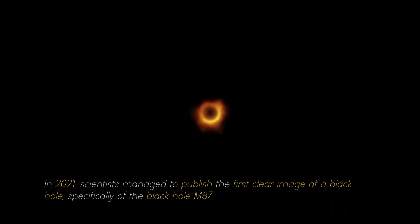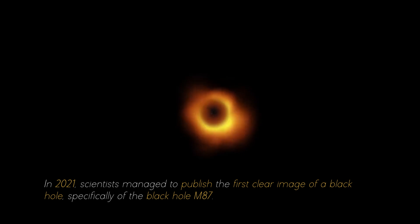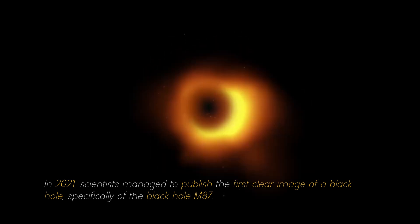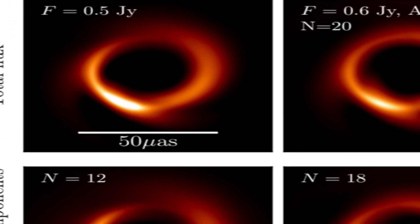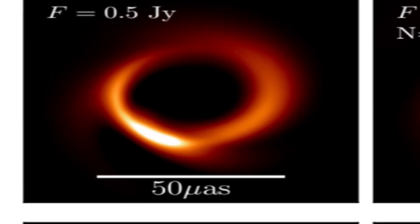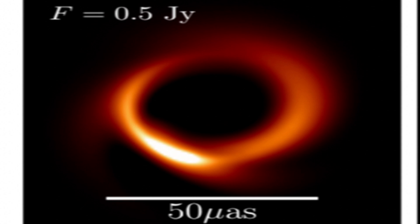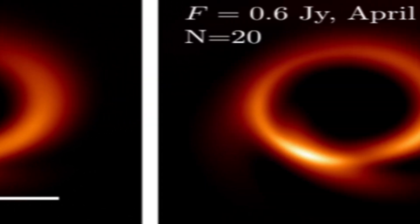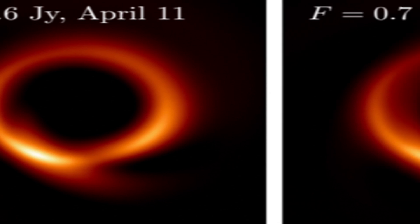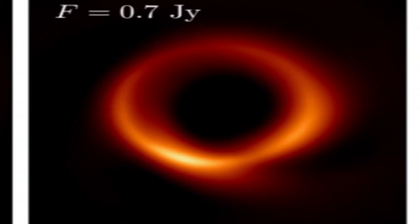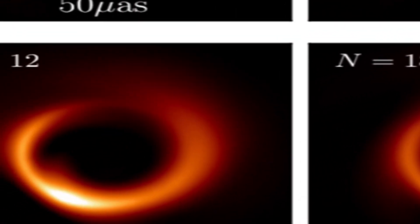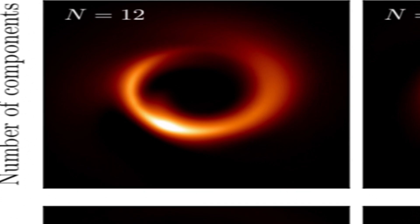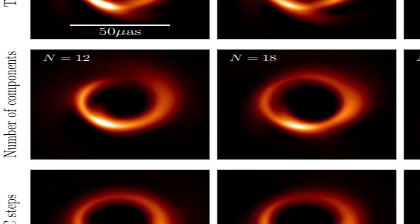In 2021, scientists managed to publish the first clear image of a black hole, specifically of the black hole M87. For several consecutive nights, photographs of the black hole were taken, and with each image researchers collected more evidence about it. It was necessary to combine the individual photographs to obtain a complete image that filled in all the gaps. In this way, the scientists discovered that black holes are not just simply an empty hole in the void, as many people believed. In reality, they are much more complex.